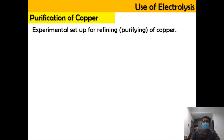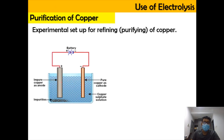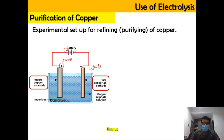For the use of electrolysis, which is purification, the experimental setup is going to be something like this. The impure copper is going to be placed at the anode, while the pure metal will be placed at the cathode. The solution that we're going to be using is the same species as in the electrolyte — so copper as anode, copper as cathode, therefore copper sulfate solution. It needs to be the same species.